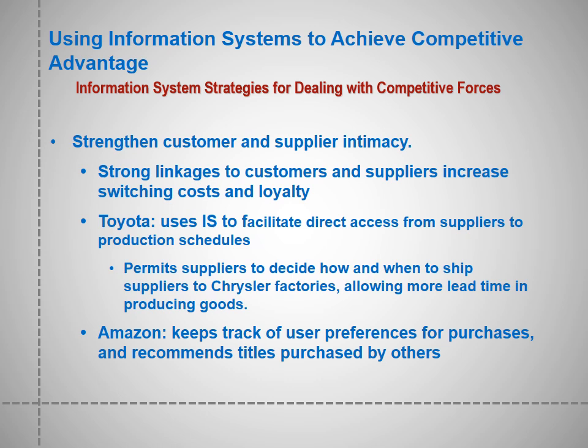IS strategies for dealing with competitive forces include strengthening customer and supplier intimacy. Strong linkages to customers and suppliers increase switching costs and loyalty. Toyota uses IS to facilitate direct supplier access to production schedules, permitting suppliers to decide how and when to ship goods to factories, allowing more lead time in producing goods. For Amazon, they keep track of user preferences for purchases and recommend titles purchased by others.